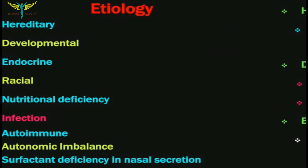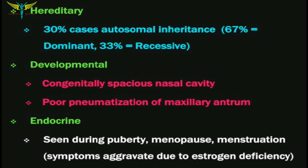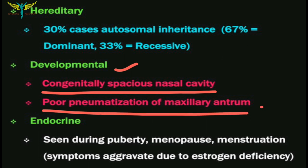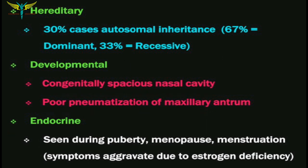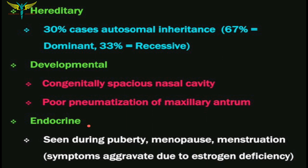Atrophic rhinitis is autosomally inherited in 30% of cases. In developmental etiology, it is seen due to congenital spacious nasal cavity and poor pneumatization of the maxillary antrum. In endocrine cause, it is seen mostly during puberty, menopause, and sometimes during the menstrual cycle. The symptoms of this disease aggravate due to estrogen deficiency. The endocrine type is of two subtypes: estrogen dependent and estrogen non-dependent.